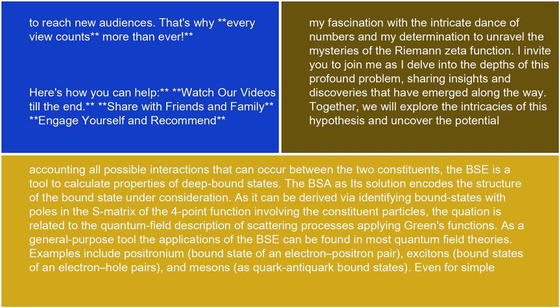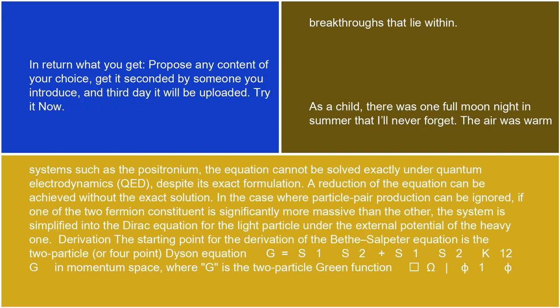As a general-purpose tool, the applications of the BSE can be found in most quantum field theories. Examples include positronium (bound state of an electron-positron pair), excitons (bound states of electron-hole pairs), and mesons as quark-antiquark bound states. Even for simple systems such as the positronium, the equation cannot be solved exactly under quantum electrodynamics, QED, despite its exact formulation.